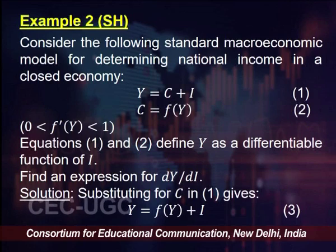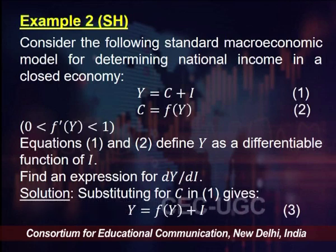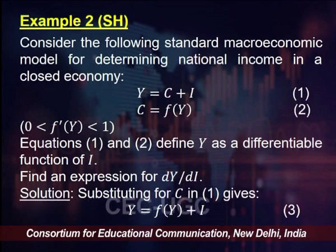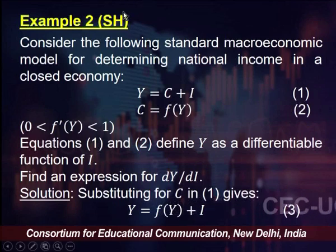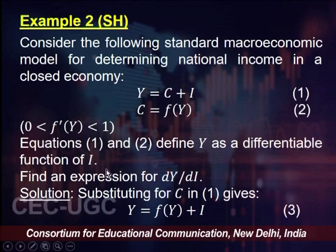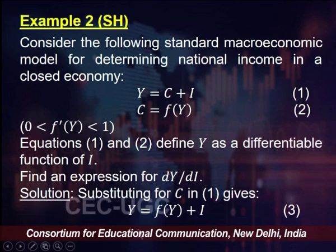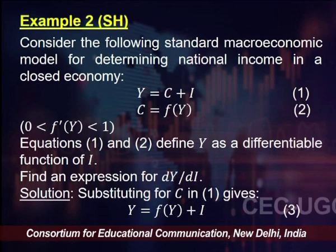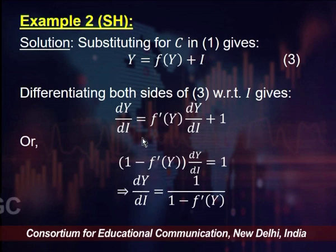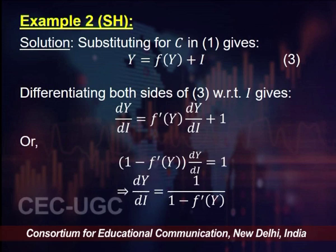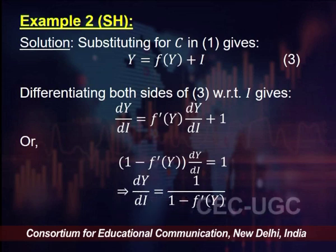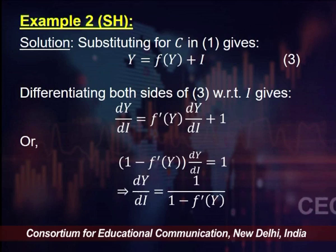Let us assume that these equations define Y as a differentiable function of I, which is investment, and what we have to do is find an expression for dy/di. To find dy/di we can substitute for C in equation 1 and write it as y equal to f(y) plus i. Once I do that I can differentiate both sides with respect to i, and this gives me dy/di equal to f prime of y times dy/di plus 1.